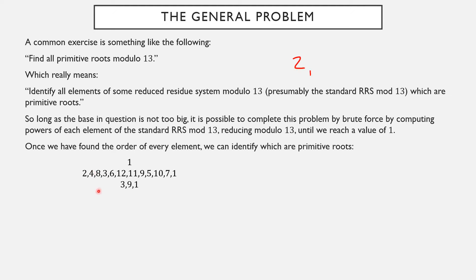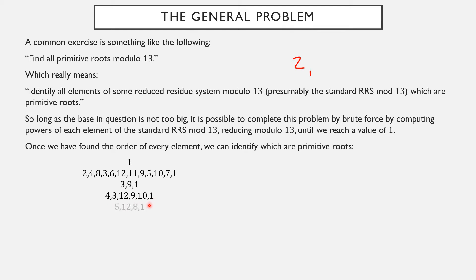Next, powers of 3: 3, 3 squared, 3 cubed is 27, but mod 13 that's 1. It only took 3 steps — not a primitive root. Powers of 4: 4, 16 is equivalent to 3, multiply by 4, multiply by 4, 48 is equivalent to 9, 36 is equivalent to 10, and 40 is equivalent to 1. So the order of 4 is 6 — not a primitive root.